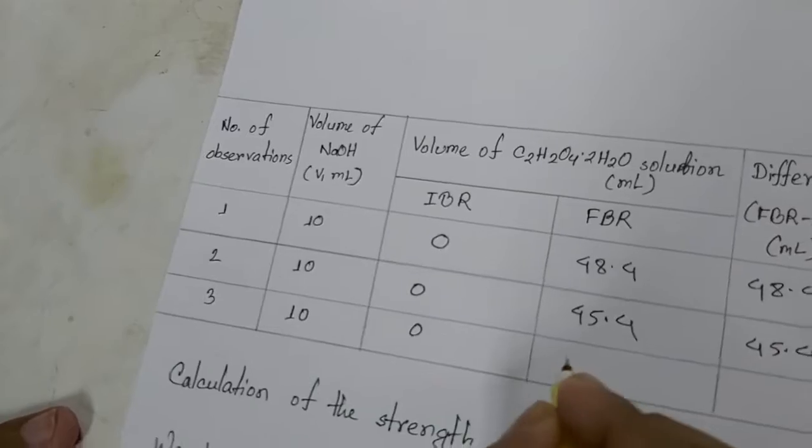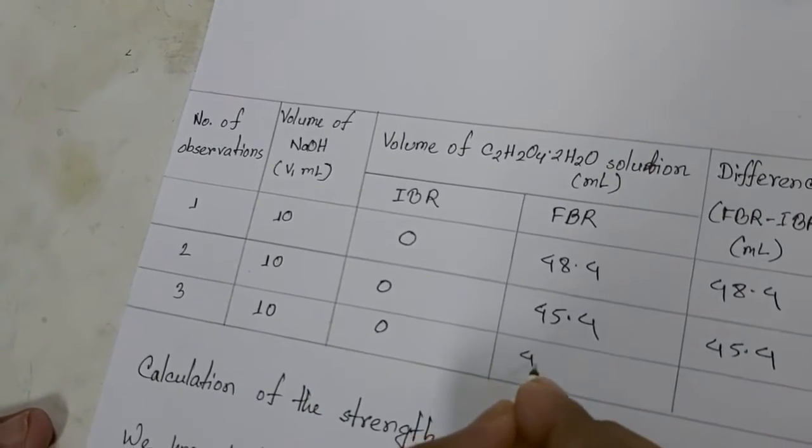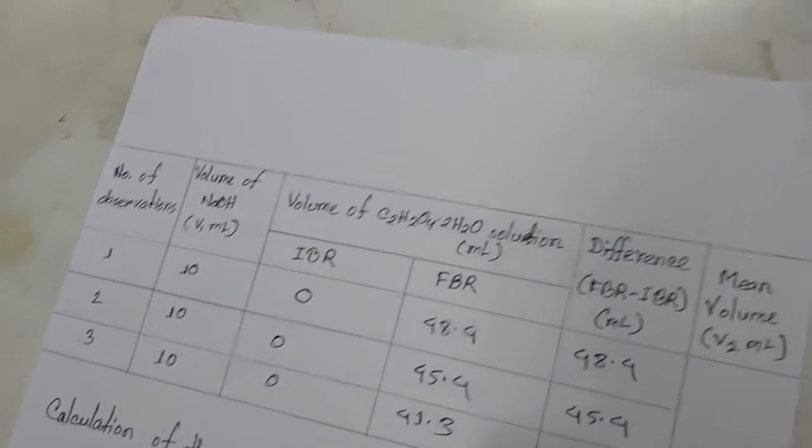We have reached the endpoint or equivalence point. The volume is 41.3. The initial volume was 0, the final is 41.3, so the difference is 41.3.